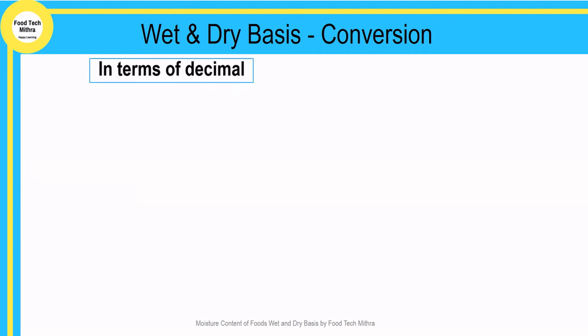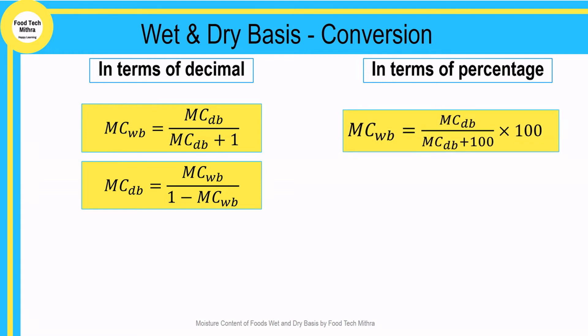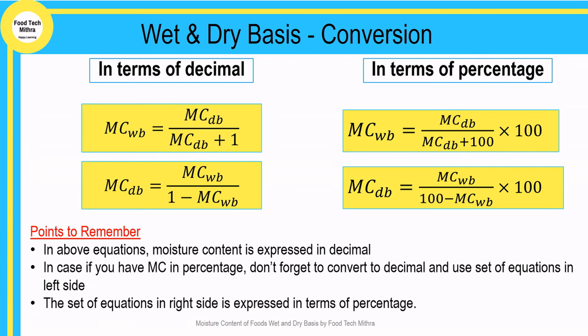Similarly, to convert wet basis moisture content to dry basis: moisture content on a dry basis equals moisture content on a wet basis divided by (1 minus moisture content on a wet basis). Note that in these equations the moisture content values are expressed as decimals. If your moisture content is in percentage, convert to decimal first before using these equations, or use the equivalent set of equations expressed directly in percentage.